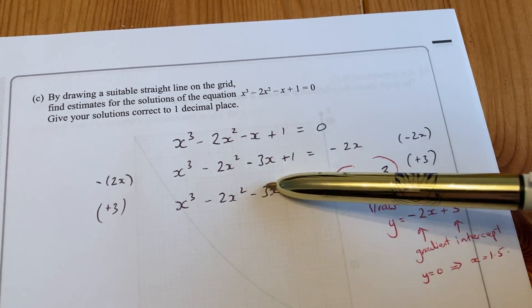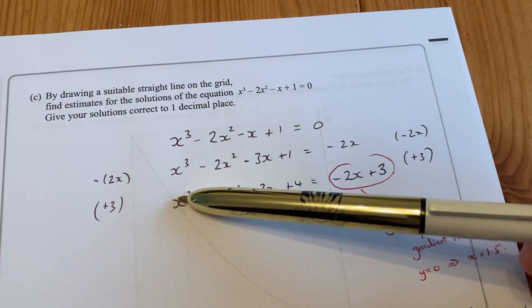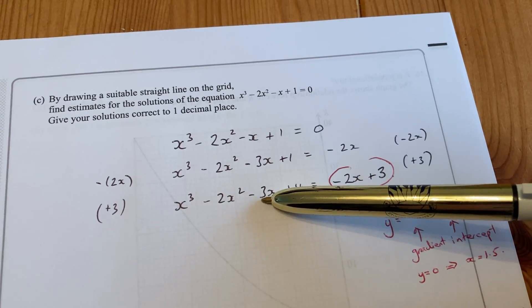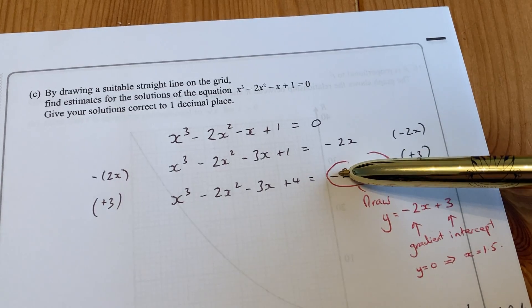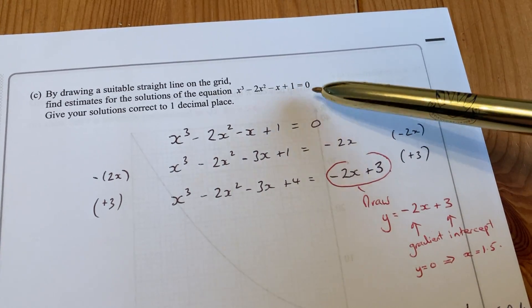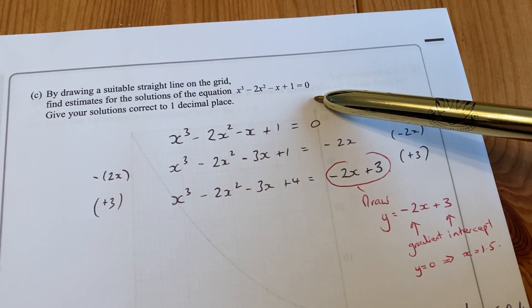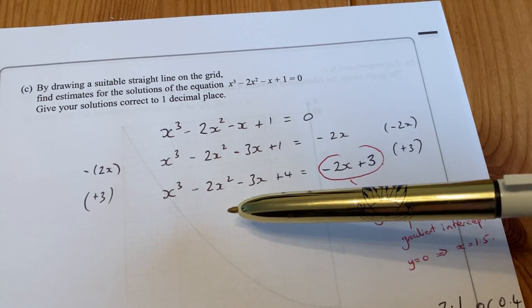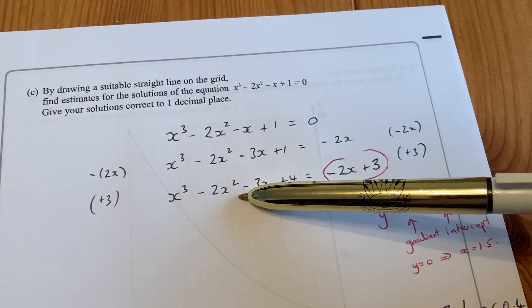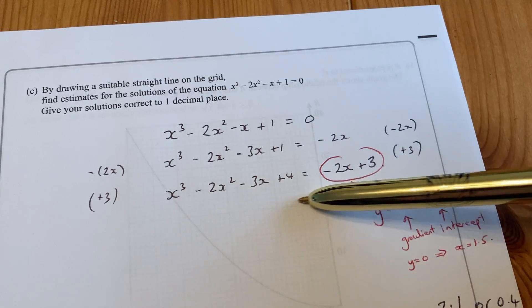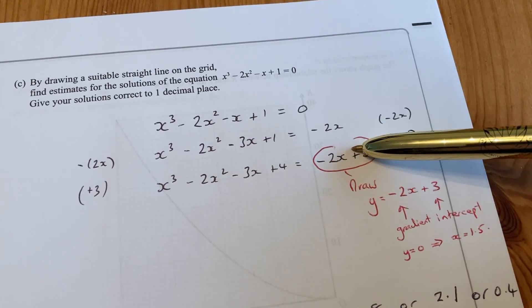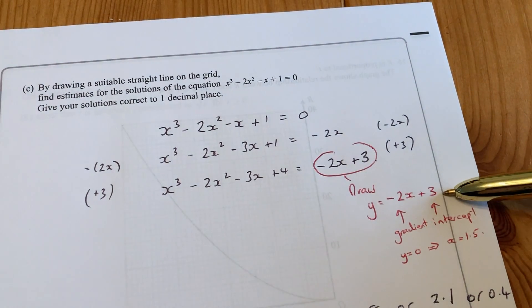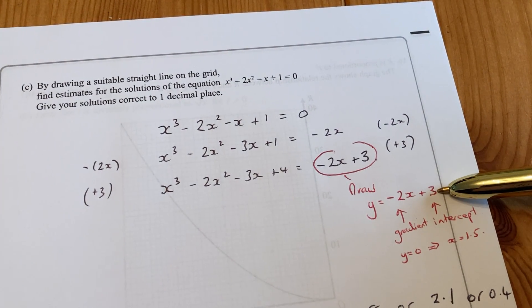Where this graph intersects with the graph of y = -2x + 3, those will be the solutions to the original equation. So you need to draw this graph on the graph paper as well: y = -2x + 3.